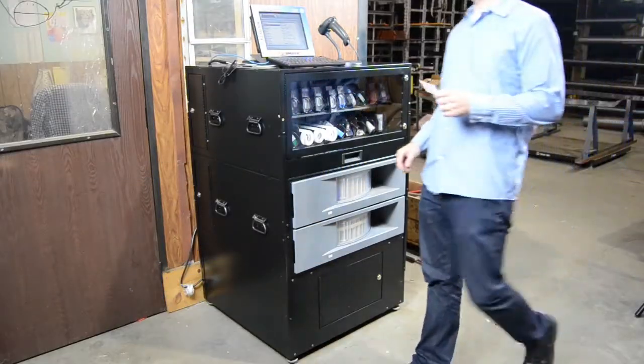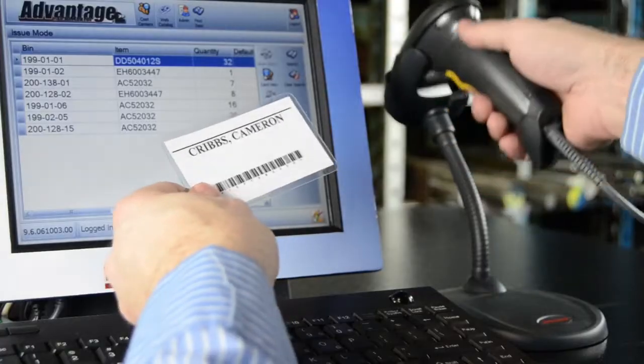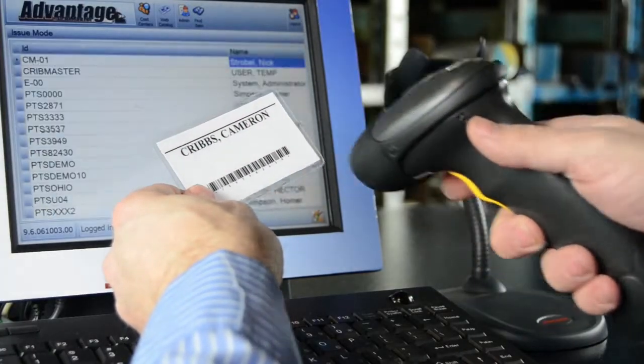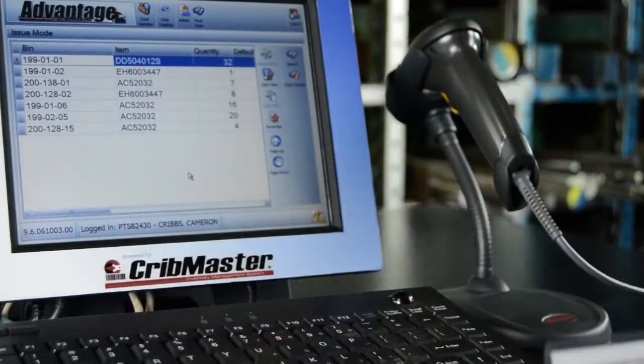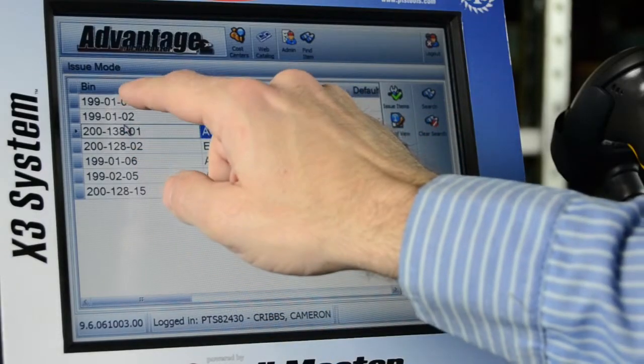To use the machine, employees simply identify themselves using a code or RFID badge, select the item they need using the touchscreen user interface, and issue the item.